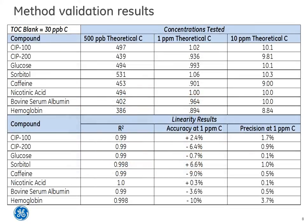The data generated from the study determined that the method was sensitive and linear over the 0.5 to 10 ppm carbon range, as the results are showing here on the screen. All eight compounds demonstrated an average R-squared value of 0.9989. Accuracy was achieved, given the average recovery values were between 89% and 106%.